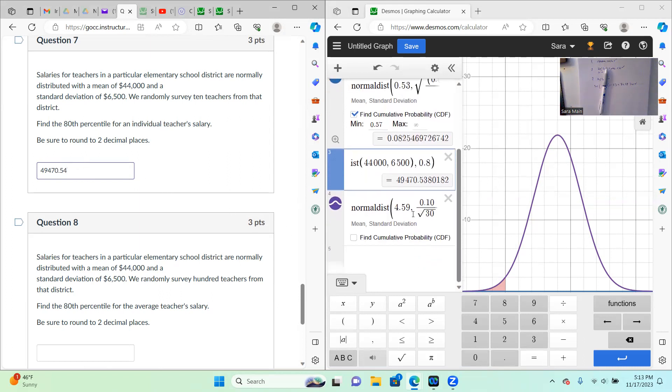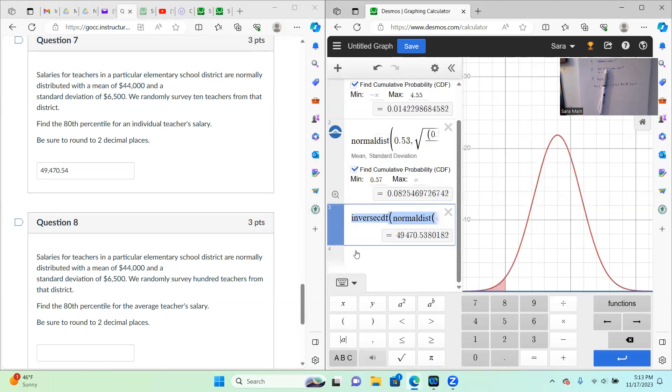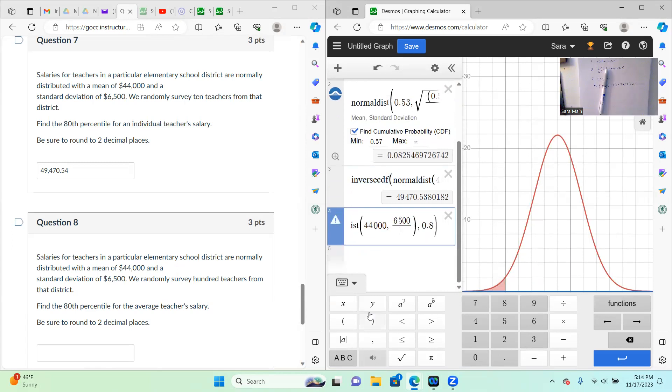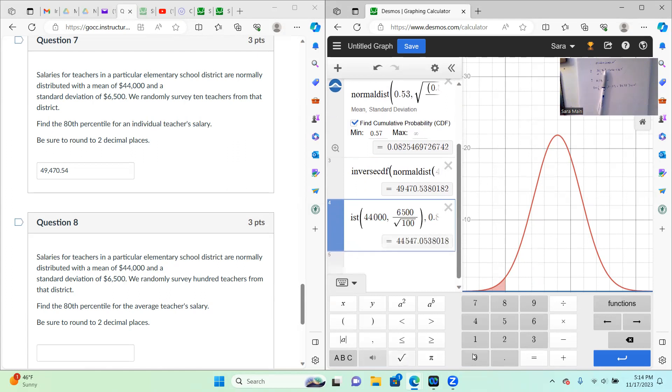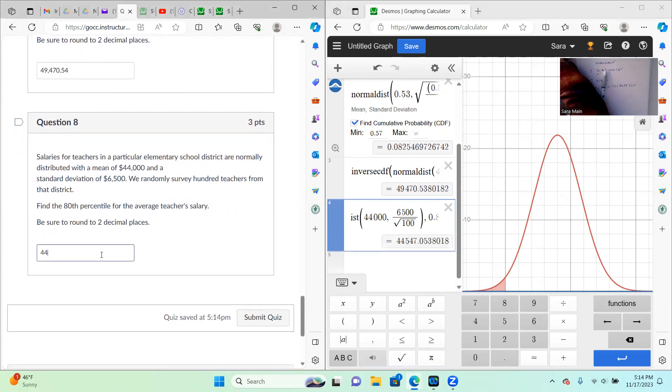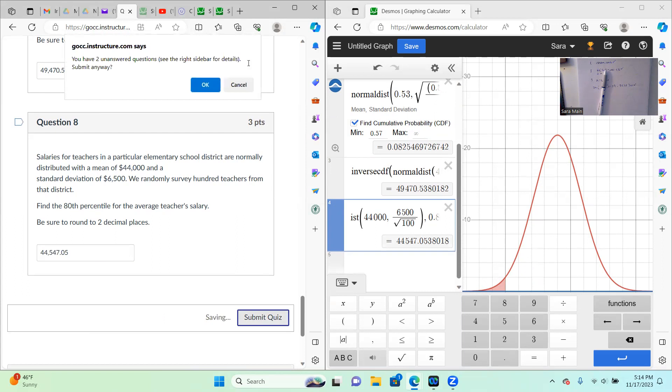But then at number 8, I do need to divide by that. So I am going to copy all of this and then paste it. But now I do need to divide by the square root of 100 because that was my sample size. And so for a sample, the 80th percentile would be 447.05. And then I'm going to submit my quiz. And there were two that I didn't answer, but everything was right except for those two that I had to write out my answers.